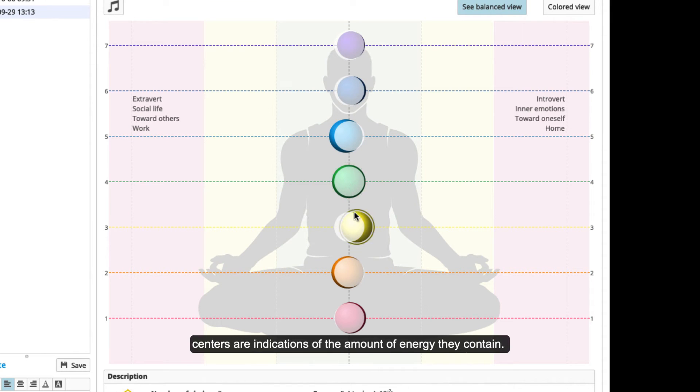The size of the energy centers are indications of the amount of energy they contain. If they are bigger than the balanced view then that means there is over activity in that center. If they are smaller than the balanced view then there is under activity in that center.